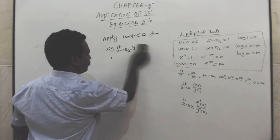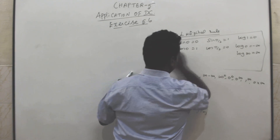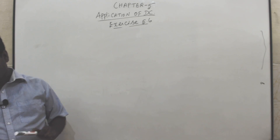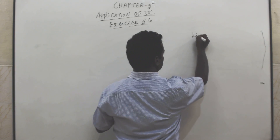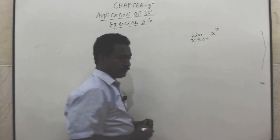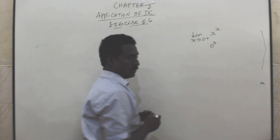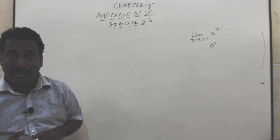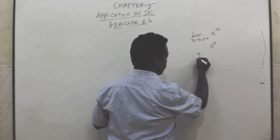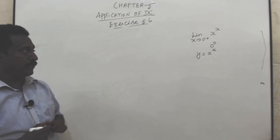The next problem: limit x tends to 0 plus of x power x. Substitute x = 0: we get 0 power 0 form. Let y = x power x.